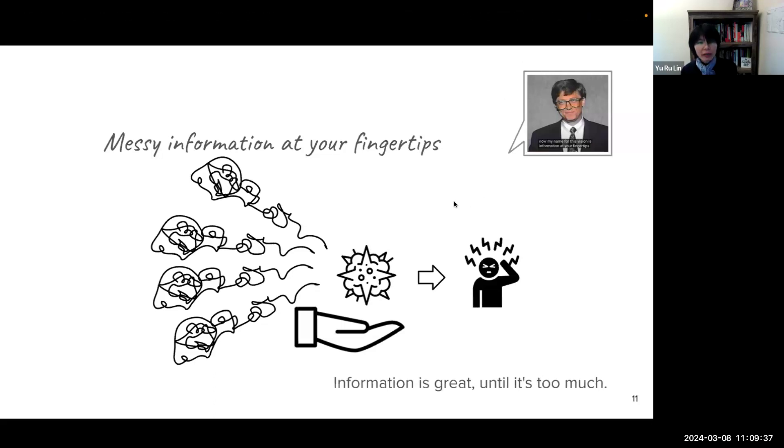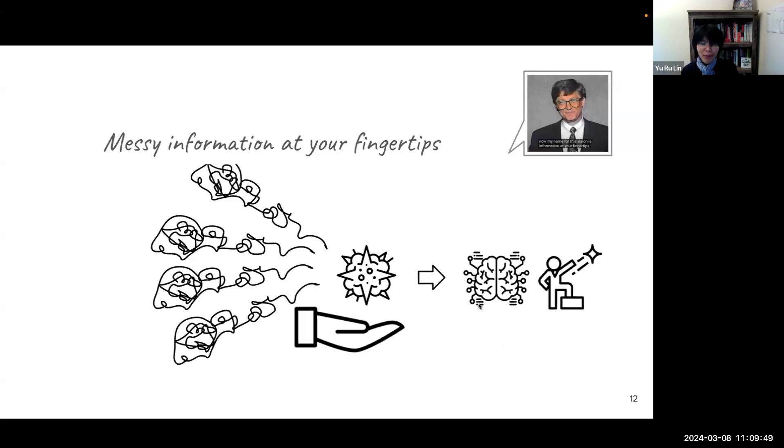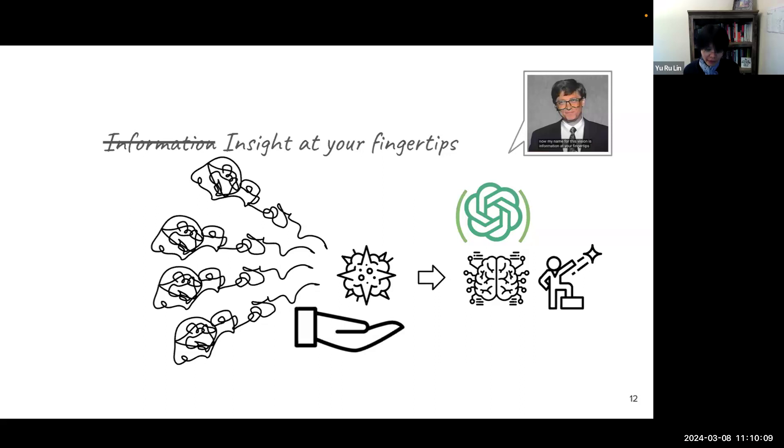So information is great until it's too much. So now after 30 years, we have another version of this picture. So while you will have all kinds of information come unorganized, AI plus big data can help you organize, learn, and get what you need, and help make decisions instantly. And you can just chat with the AI. So today's journalists coined this vision, insight at your fingertips.